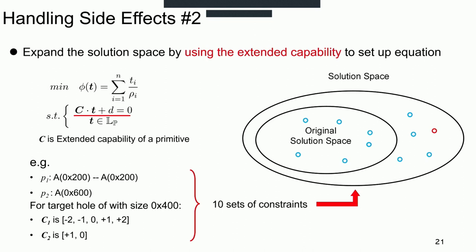Compared to the following method, we use extended capabilities to set up the constraints. Since the extended capability C could be different values, we are able to construct many sets of constraints and effectively expand the solution space. Therefore, we could find more feasible solutions based on the extended solution space.